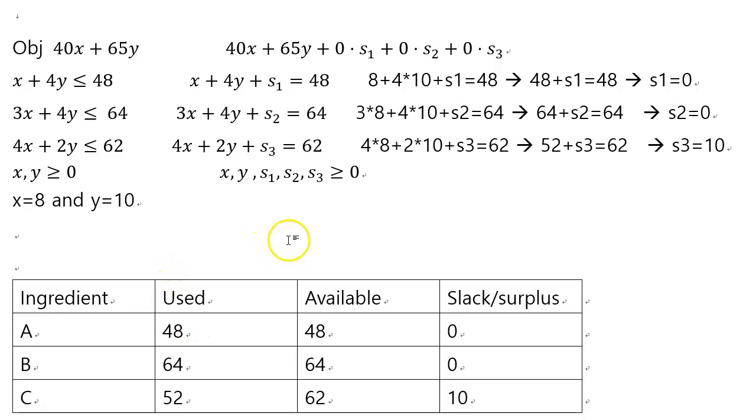So what is the complete solution? x equals 8 and y equals 10 is just the solution. But when you say complete solution in linear programming, that means you want to say not just the value of x and y, you also need to write down the surplus values. So s1 equals 0, s2 equals 0, and s3 equals 10. Those will be the complete solution of the given linear problem.